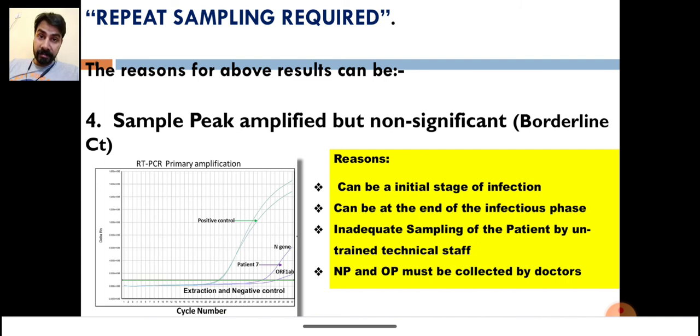We cannot omit that patient as negative. We cannot declare that patient as negative. In that case, we will declare repeat sampling required. This is the safer and the best side to declare the result as repeat sampling required.